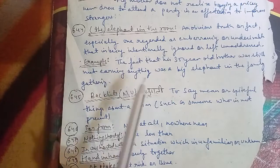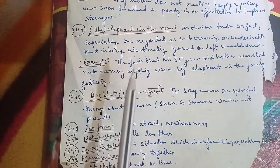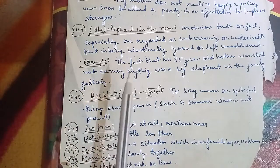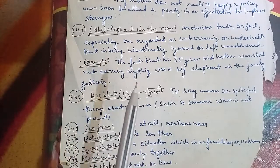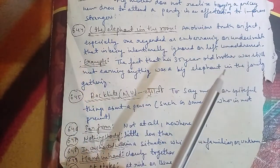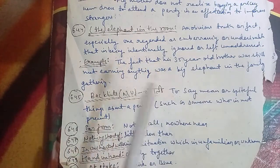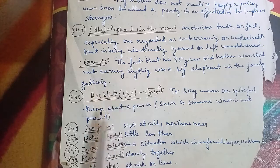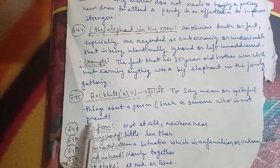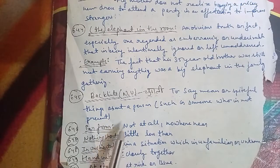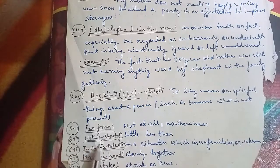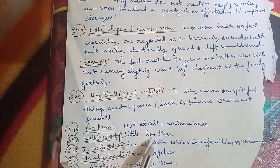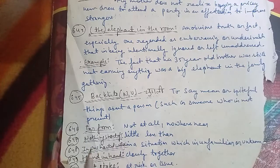The 646th word is 'far from', which stands for 'at all' or 'nowhere near'. The 647th word is 'nothing short of', meaning 'a little less than'. The 648th word is 'in a venture', meaning a situation involving something unfamiliar or unknown. The 649th word is 'hand in hand', meaning closely together. The 650th word is 'at stake', meaning at risk or at issue.